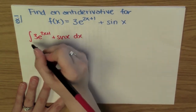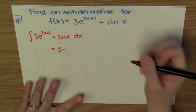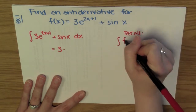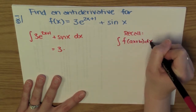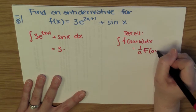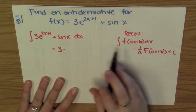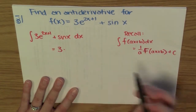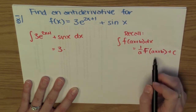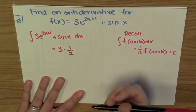What am I going to get here? The 3 is constant so I don't have to worry about that. For e^(2x+1), we recall that the anti-derivative of some function to the ax+b is equal to 1/a times the anti-derivative of that function at ax+b, plus our constant. So here I have e as my function to the 2x+1, so a is 2 and b is 1. I know the anti-derivative for e^x, so I'm going to plug in ax+b and divide by the coefficient a — I divide by 2.